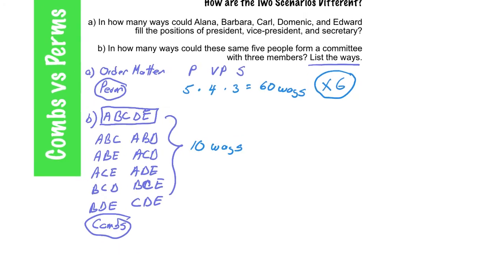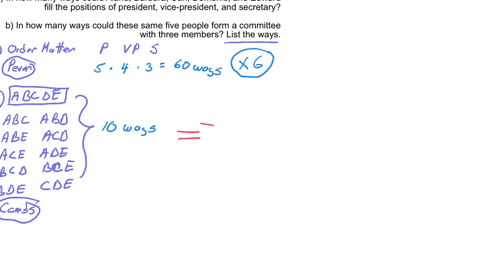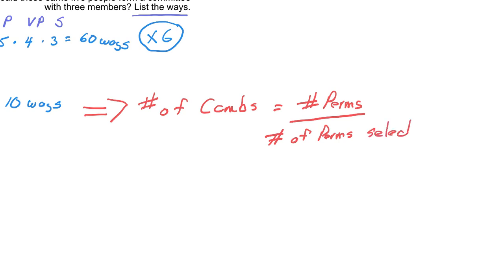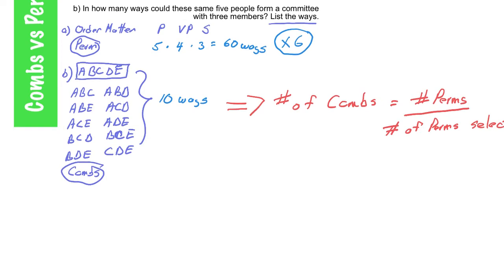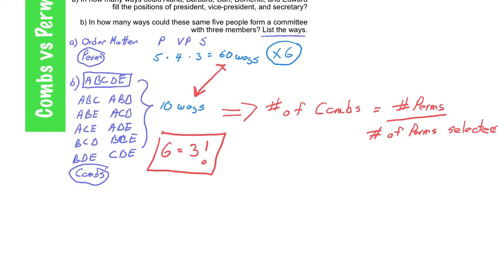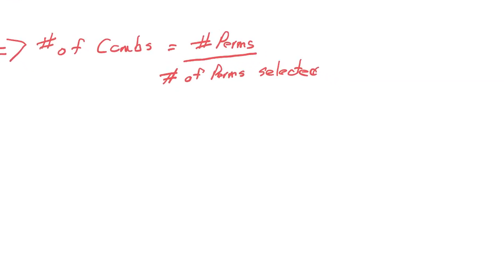So when we're looking at combinations, the concept of combinations. Now knowing the difference, the number of combinations of permutations equals the number of permutations divided by the number of permutations selected. We're going to go back just a little bit here. Again, this difference between 60 and 10 is 6, but 6 is equal to 3 factorial. We're going to use that piece of information right now.